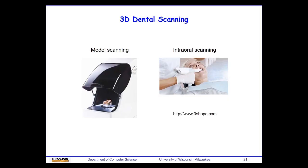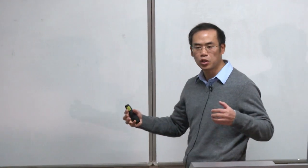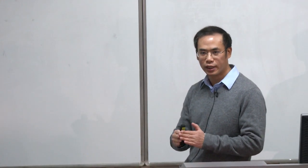We've seen applications of active 3D scanning in the dental industry — both model scanning and intraoral scanning. For model scanning, a 3D scanner rotates a platform to take pictures from different views, then stitches the 3D depth information together to form a complete 3D model.